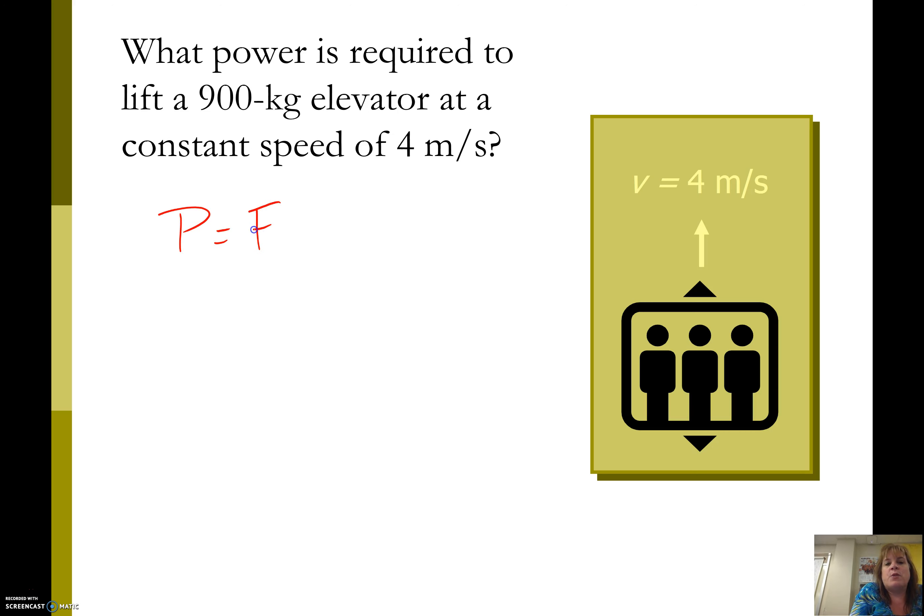Well, power is force times velocity. In this case it's constant velocity. What is the force being applied? If we draw a free body diagram, we have the force of gravity down and a tension force up, or the lifting force. At constant speed, the sum of forces equals zero.